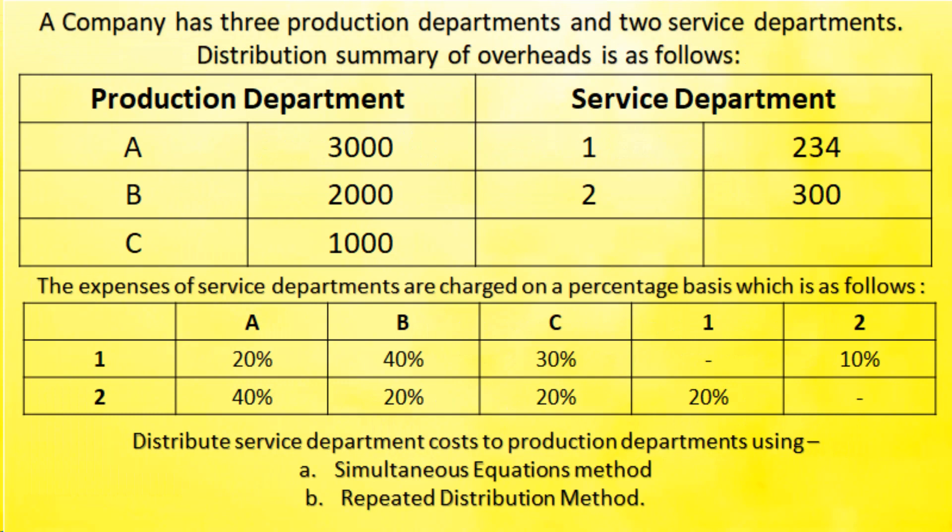The question is on the screen. Please take a screenshot or pause the video and write down the question. A company has three production departments — A, B, and C — and two service departments: service department number one and service department number two.